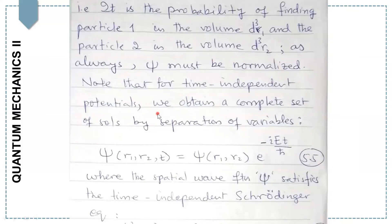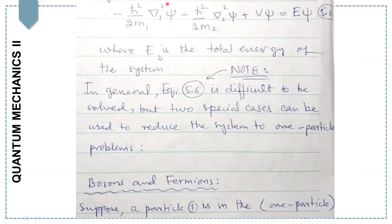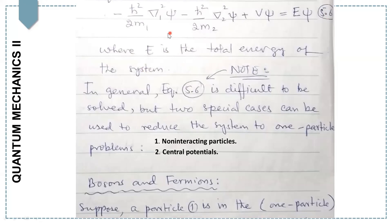Note that for time-independent potentials, we obtain a complete set of solutions by simply using the technique of separation of variables. By the help of this technique, we get ψ(r₁, r₂, t) = ψ(r₁, r₂) · e^(−iEt/ħ), where ψ satisfies the time-independent Schrödinger equation: −ħ²/2m₁ ∇₁²ψ − ħ²/2m₂ ∇₂²ψ + Vψ = Eψ, where E is the total energy of the system.